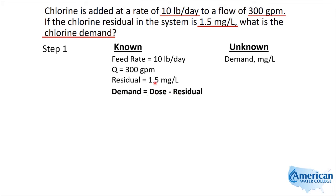Looking at this formula, we know that the residual is 1.5 milligrams per liter — that's this term. We don't know the demand, and we don't know the dose either. However, they gave us enough information to calculate the dose — they told us our pounds per day and our flow. So if we can calculate the dose, we can subtract 1.5 from it and that will give us our demand.